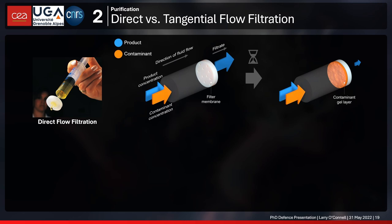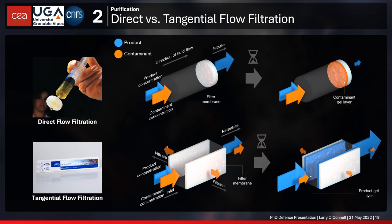We explored using tangential flow filtration instead. The principle of TFF places the filter membranes parallel to the flow of the liquid. Contaminants and product pass through a microfluidic flow through the cartridge, and under pressure, contaminants pass laterally across the filtration membrane. The key feature of TFF is recirculation — the liquid is brought back and pumped through again and again. Even though a gel layer builds up inside the cartridge, the filter membranes are continually stripped and renewed by the tangential flow of fluid.